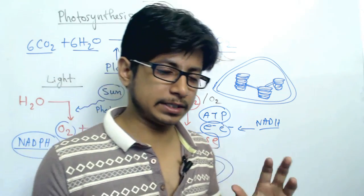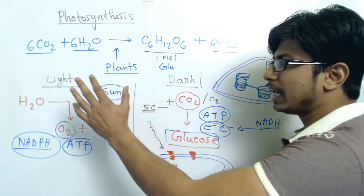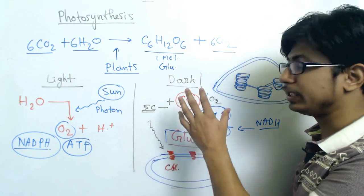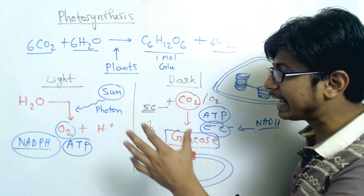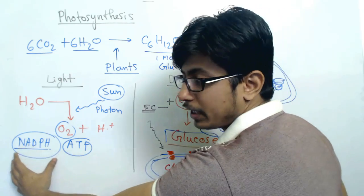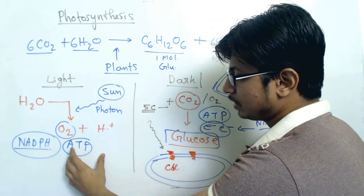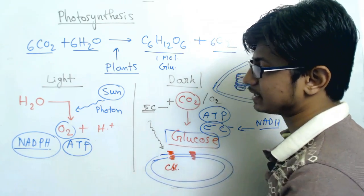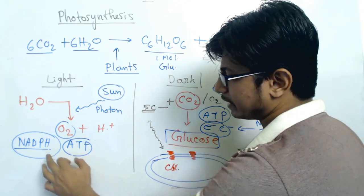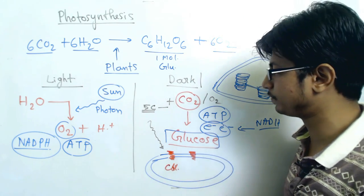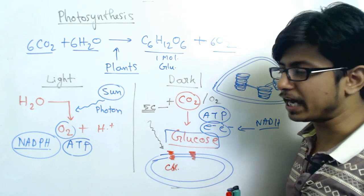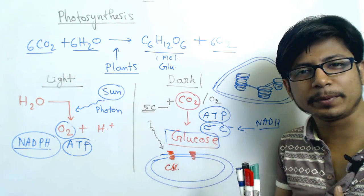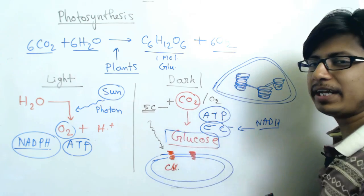In the Calvin cycle, the light reactions provide materials required to initiate the process. The end products of the light reactions are NADPH and ATP. ATP provides the source of energy, and NADPH acts as an electron carrier required in dehydrogenase enzyme-involved reactions and different redox reactions. Photosynthesis is essentially an endothermic redox reaction.